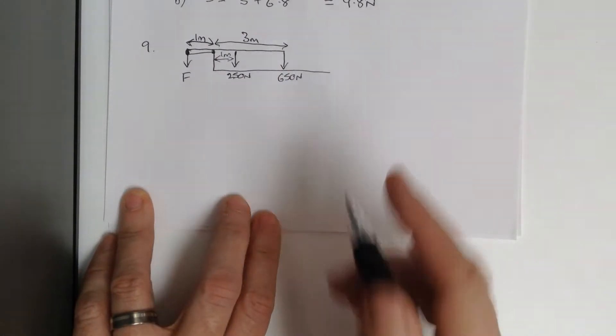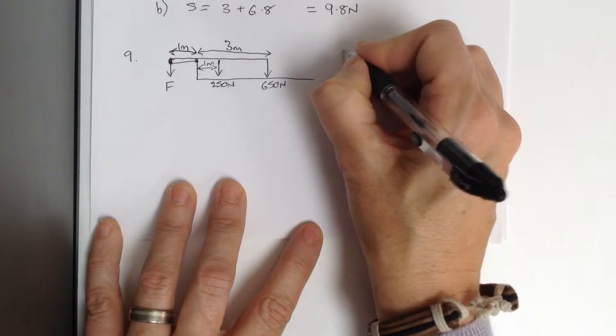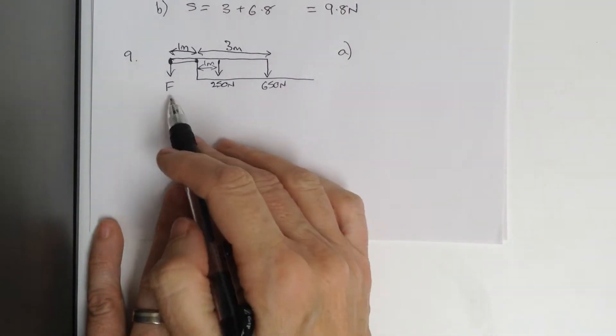So, the question says, what is the force on the bolts? So, part A, what is F, basically?